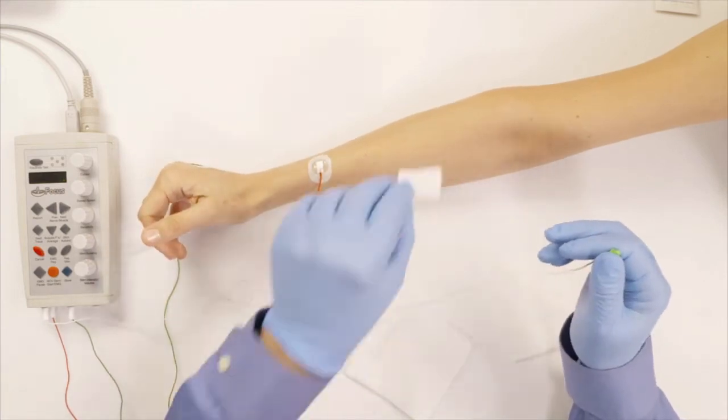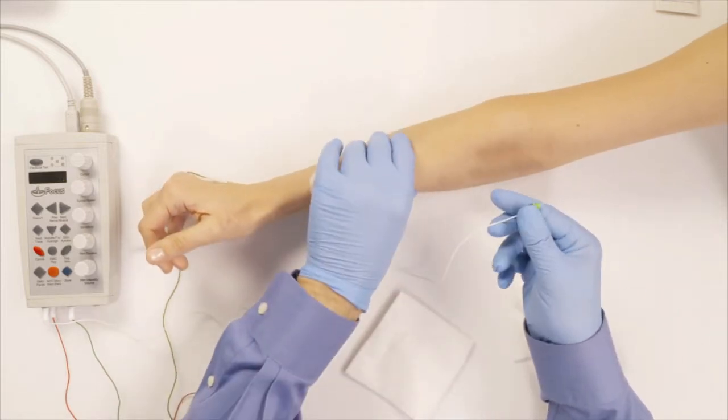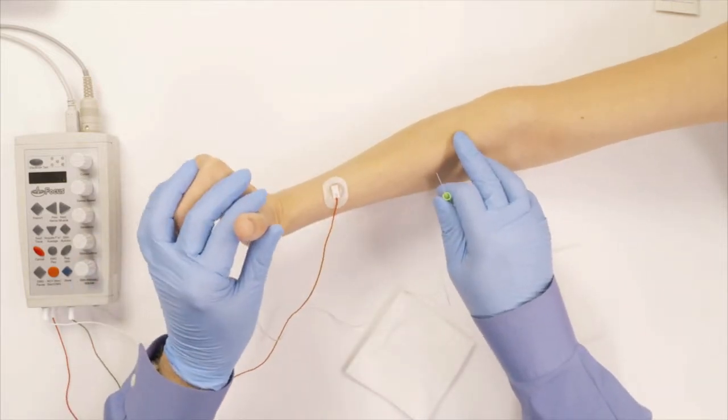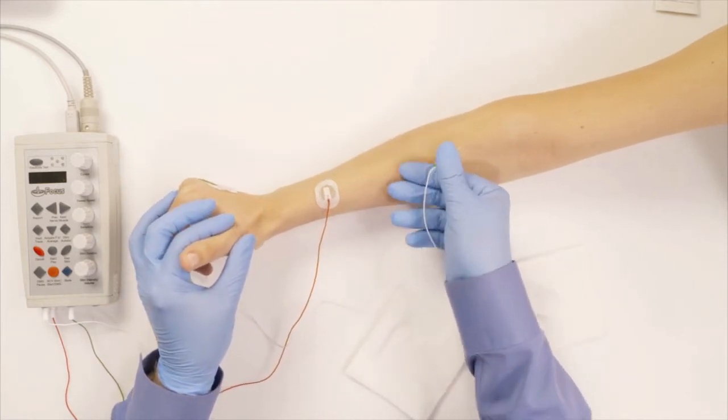So then I wipe the skin with alcohol, and again, raise your arm up a little bit, like so. Okay, now I can see exactly where the muscle is, and I go in.